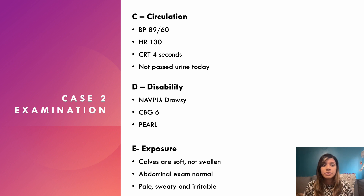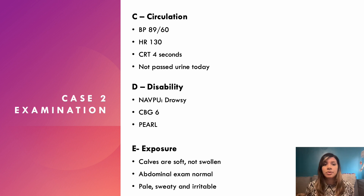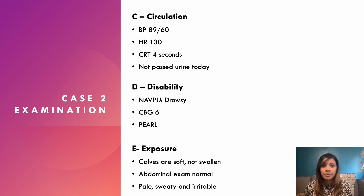On disability: she's drowsy, responding to voice on the AVPU scale. Blood glucose is normal at 6, pupils equal and reactive to light. On exposure: calves are soft, no signs of DVT, abdominal exam is normal, but she is pale, sweaty, and a bit irritable.